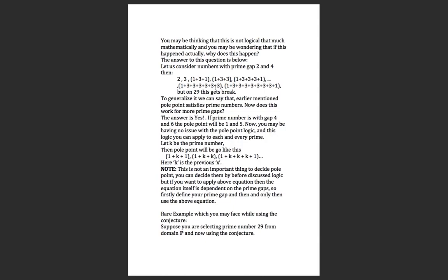You may see that 1 is repeating: even time, odd time, even time, odd time. You can generalize this, but it breaks at 29 and at prime numbers having the unit digit 9. We can generalize this as 1+k+1, 1+k+k, and so on. Here x, taken in the previous formulation, is our variable pole point, and k is also a variable pole point.